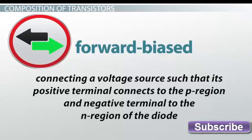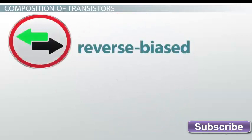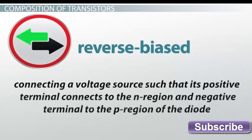Voltage is greater at the tail end compared to the pointed end of the diode symbol. Reverse biased: connecting a voltage source such that its positive terminal connects to the N region and negative terminal to the P region of the diode.